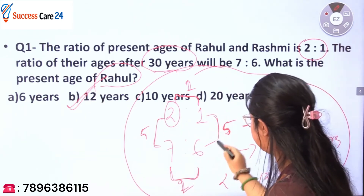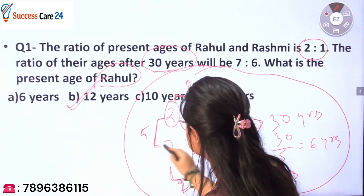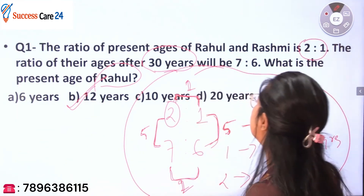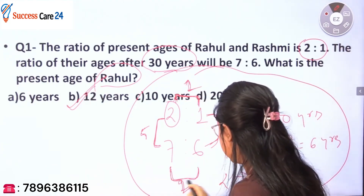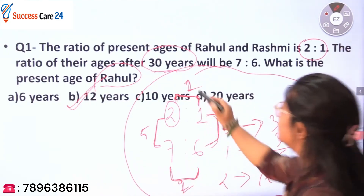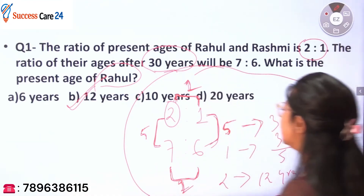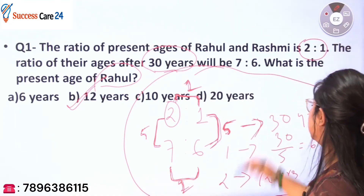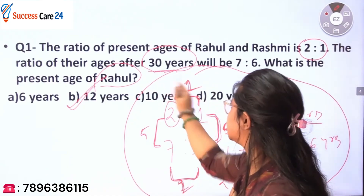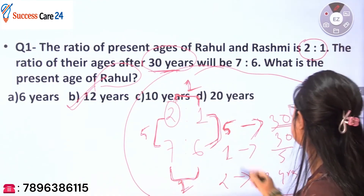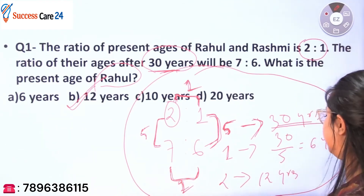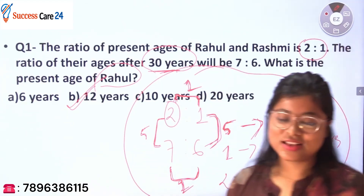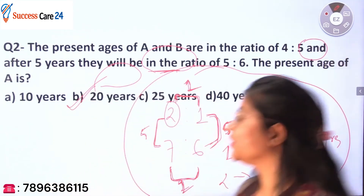To recap the short trick: check the vertical difference — 2 to 7 is 5, and 1 to 6 is 5. Check horizontally — difference is 1 in both rows. Equate the vertical difference of 5 to the 30 years given in the question, so 1 ratio = 6 years and 2 ratios = 12 years. That is how you solve such questions within seconds.